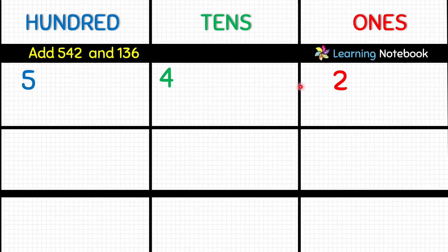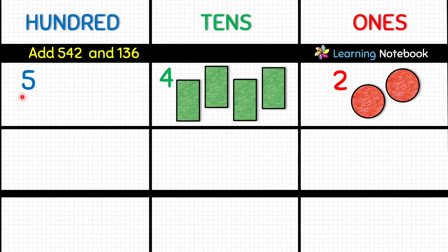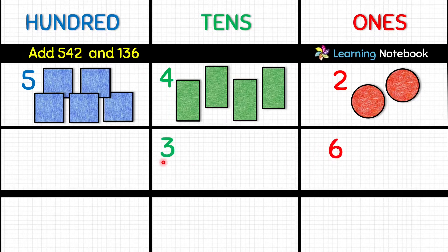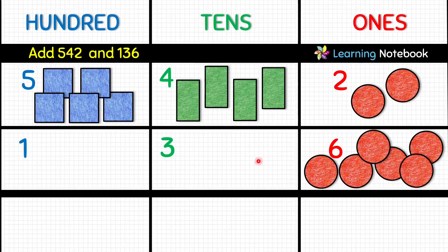So first, for 2 ones, let's put 2 red circles here. Next, for 4 tens, let's put 4 green rectangles here. And then for 500, let's put 5 blue squares. The next number is 136, where 6 is at the ones place, 3 is at the tens place, and 1 is at the hundreds place. So first, for 6 ones, let's put 6 red circles here. Next, for 3 tens, put 3 green rectangles.